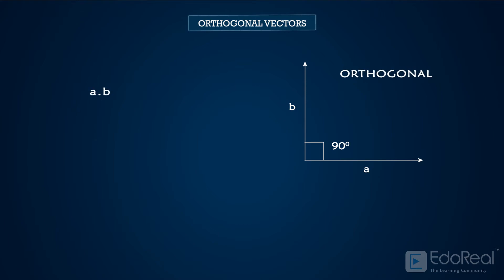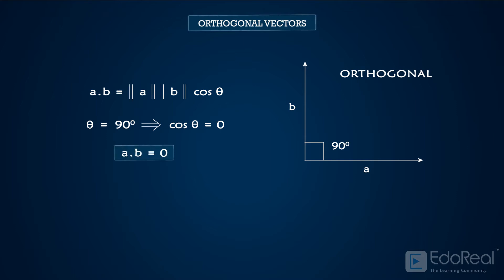We know that the dot product is represented as the product of the magnitudes of the two vectors along with the cosine of the angle between them. The angle between the two orthogonal vectors is 90 degrees. So cos theta equals cos(π/2), which equals zero. And hence, the dot product of two orthogonal vectors is equal to zero.